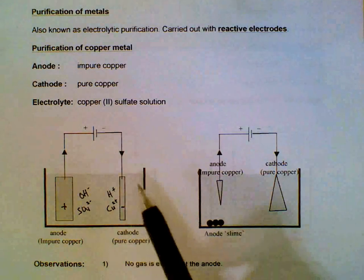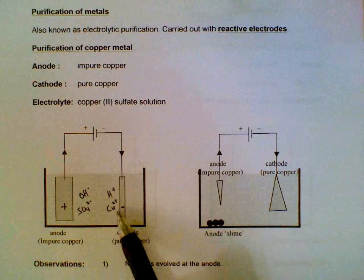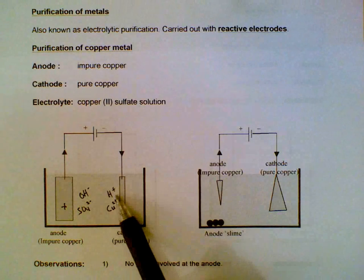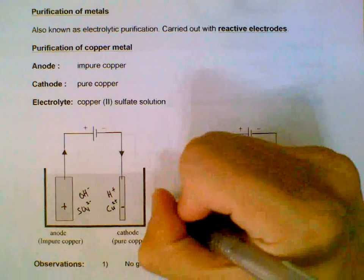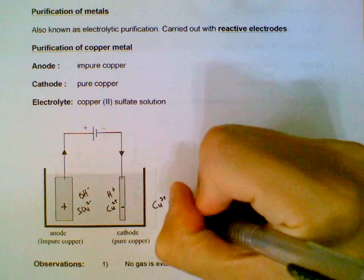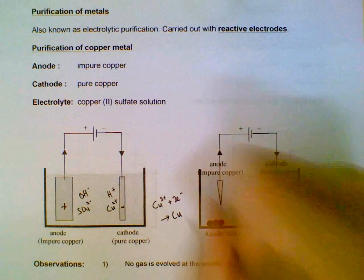So we look at the cathode. At the cathode we have the copper ions and hydrogen ions, and copper ions will be preferentially discharged. It will be reduced to form a deposit of copper.